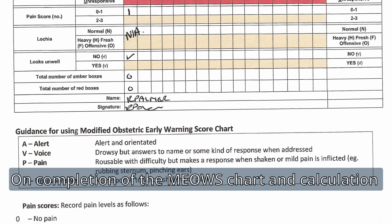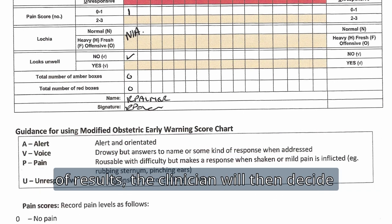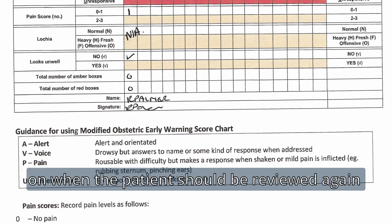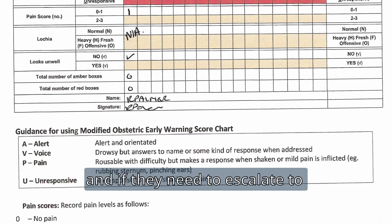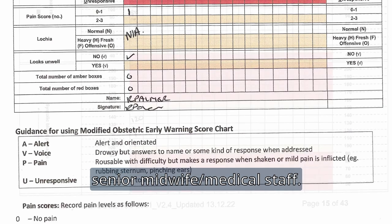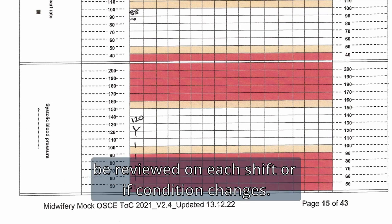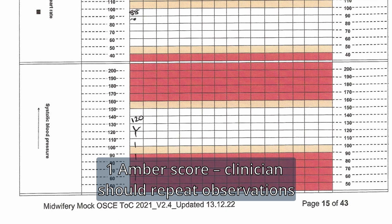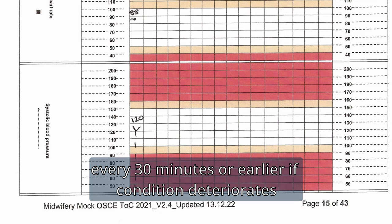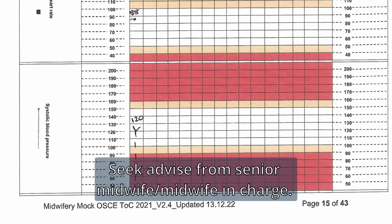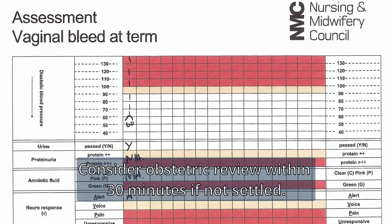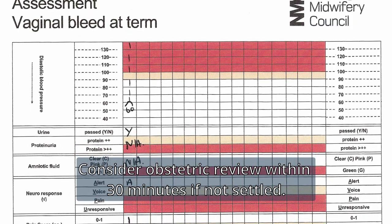On completion of the MEOWS chart and calculation of results, the clinician will decide when the patient should be reviewed again and whether they need to escalate to senior midwife or medical staff. All white scores: patients should be reviewed on each shift or if condition changes. One amber score: repeat observations every 30 minutes or earlier if condition deteriorates, and seek advice from the senior midwife or midwife in charge.